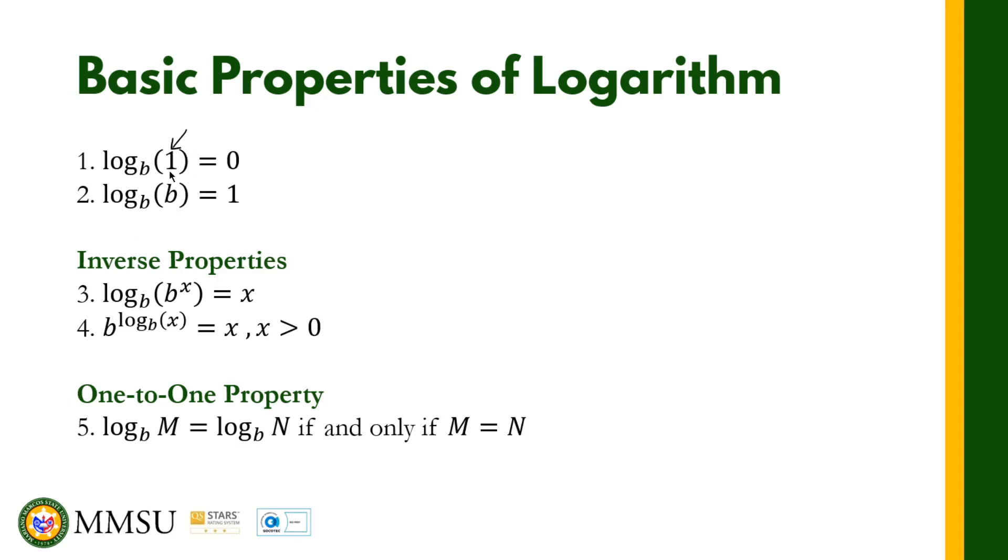That's basic property number one. Number two: the logarithm of b with base b, log_b(b) = 1. As you can see, the base and the number are both the same. If these two numbers are the same, the answer is equal to 1.